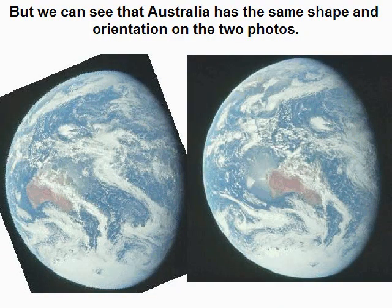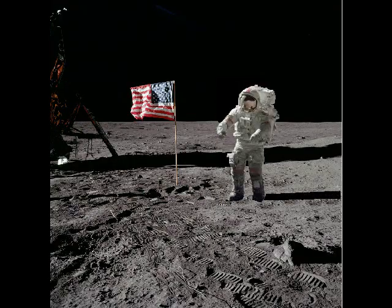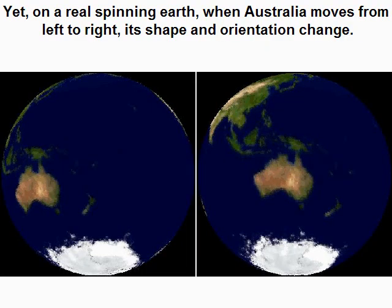But we can see that Australia has the same shape and orientation on the two photos. Yet on a real spinning Earth, when Australia moves from left to right, its shape and orientation change.